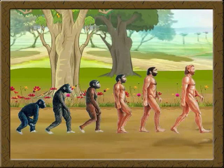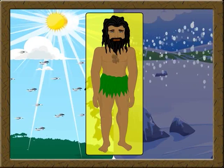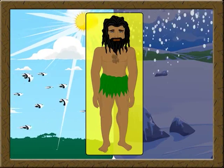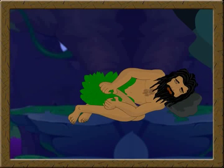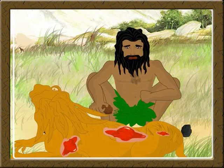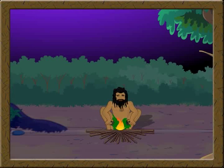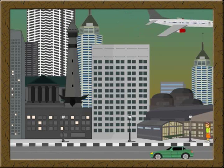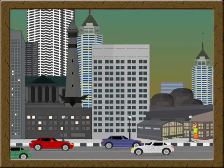Man has evolved from chimpanzee. For his livelihood, he utilizes nature. He used leaves to cover his body to save himself from heat and cold. He lived like an animal in the forest and took shelter in the caves. He used to kill animals for his food. To kill animals, he used tools made of stones. He used small rocks to create fire, and also used fire as light. Gradually, he civilized, learned many things, and began using different material for his comfortable living.